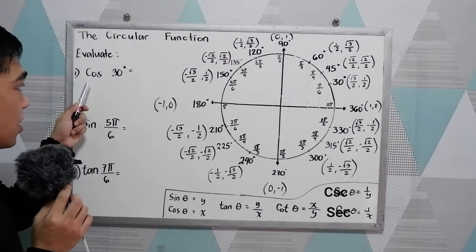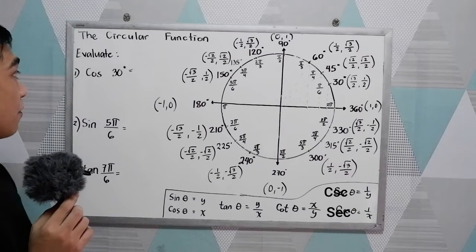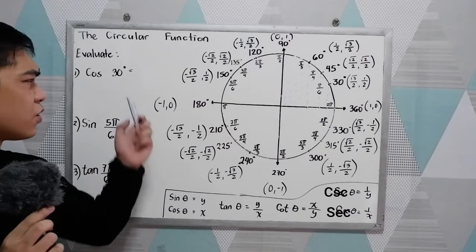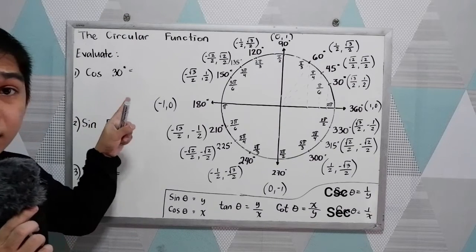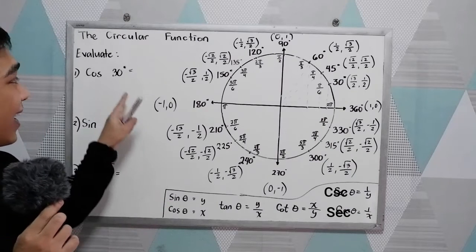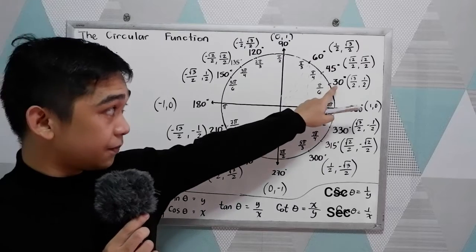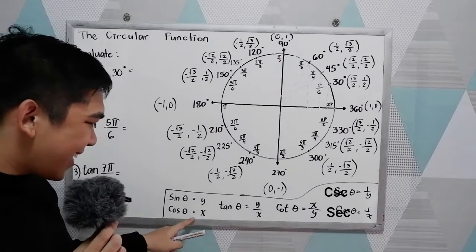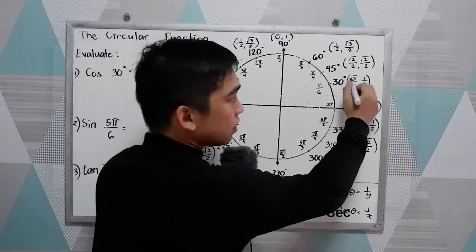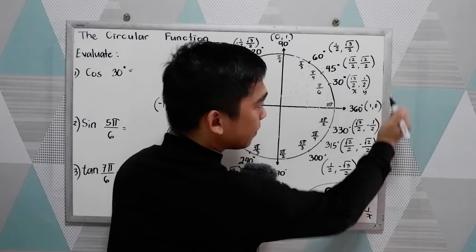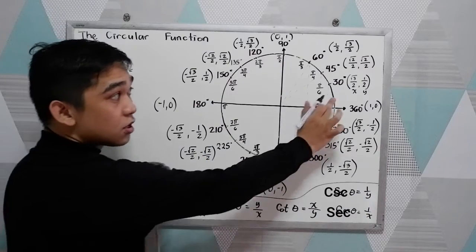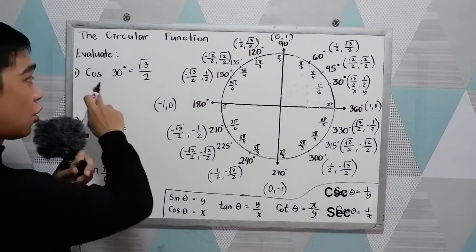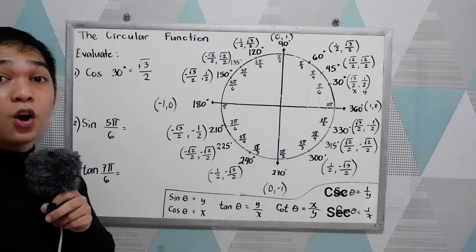Evaluate. Number one: cosine 30 degrees. So we need to get the exact value of the given. First, locate our angle — the angle is 30. Our function is cosine, and cosine indicates our x. Looking at the coordinate, we're looking for the value of x, which is √3/2. Therefore, cosine 30 degrees is equal to √3/2.